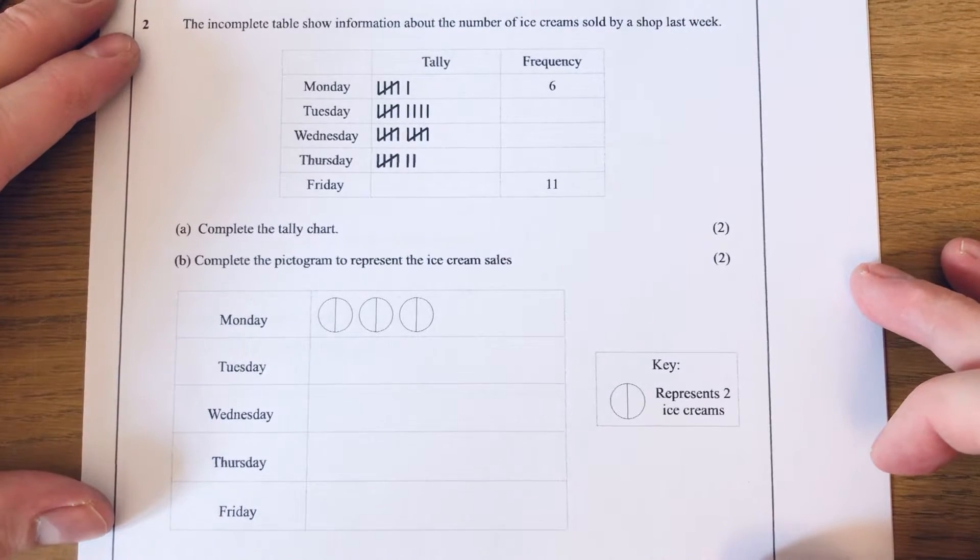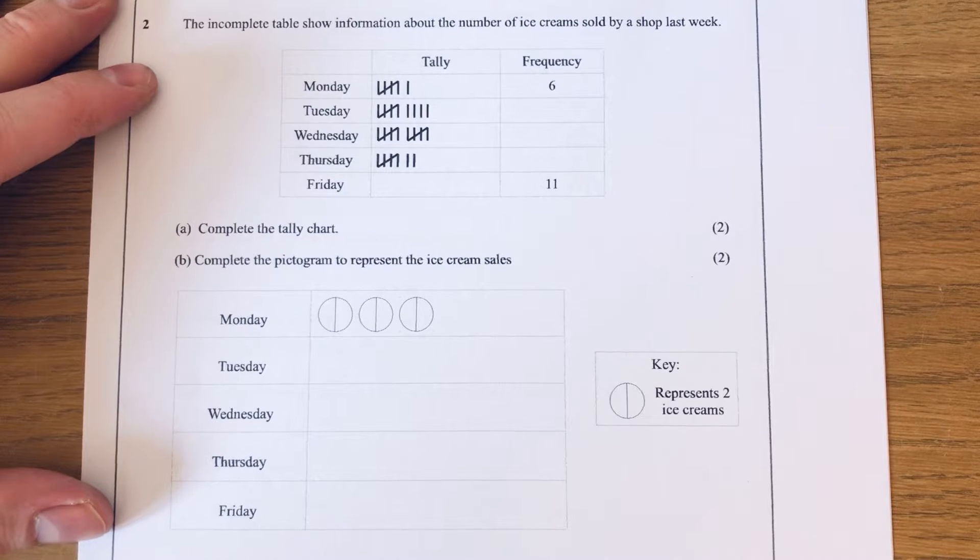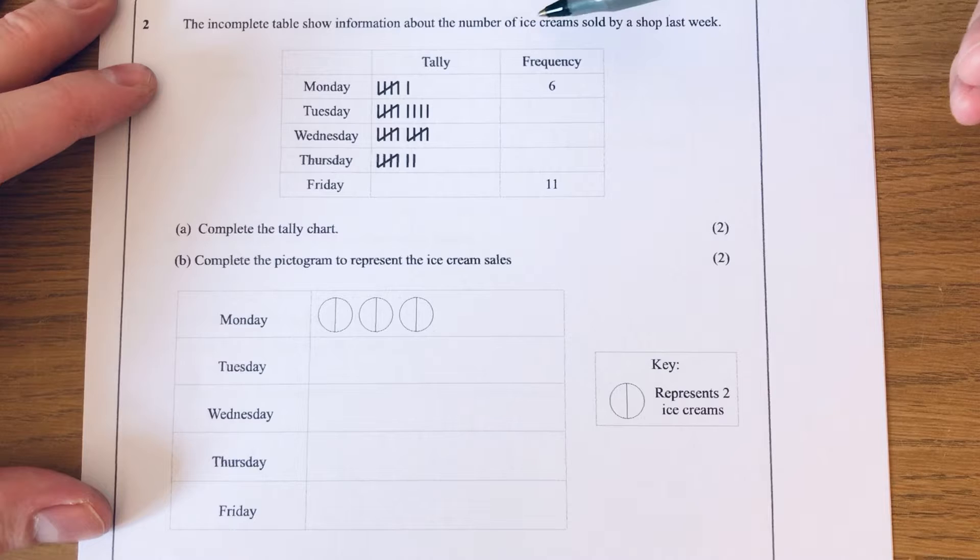Hi guys, welcome back. This is Maths 3000. Today I'm going to work through some exam questions on pictograms. Let's have a look at our first exam question. The incomplete table shows information about the number of ice creams sold by a shop last week.